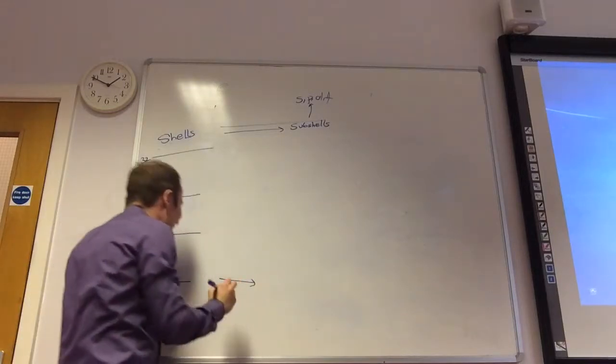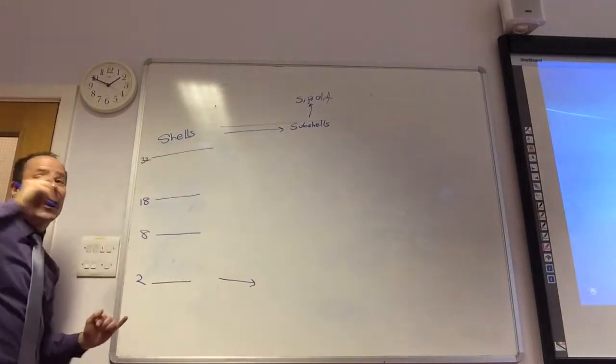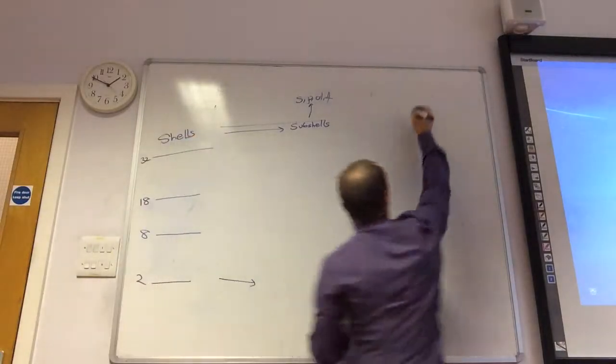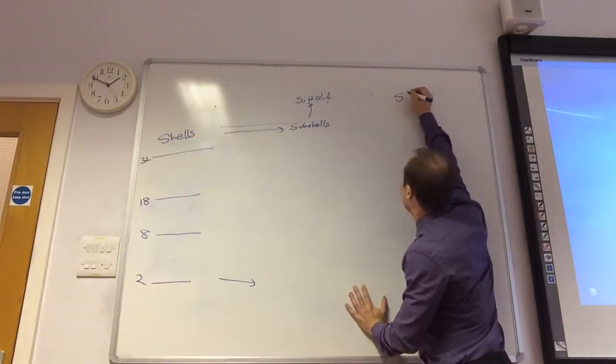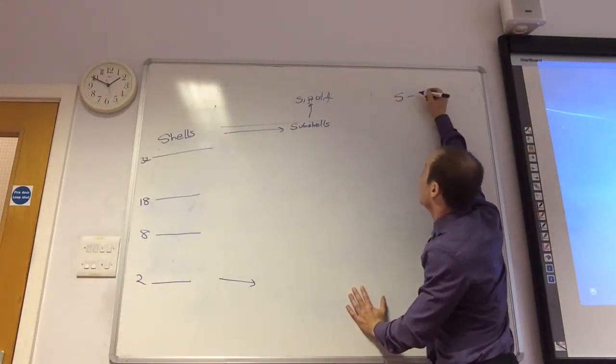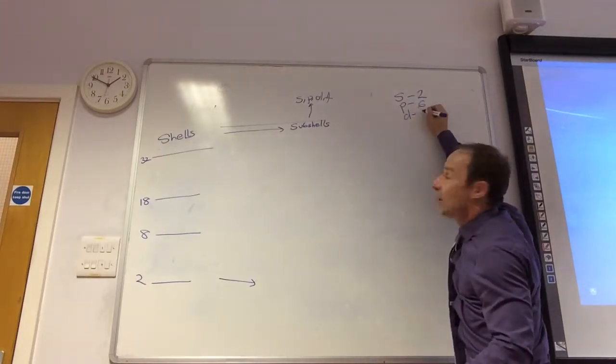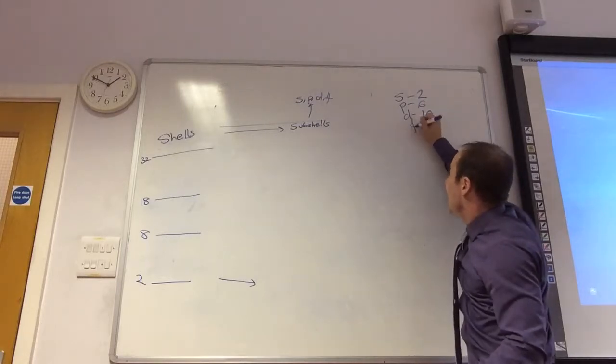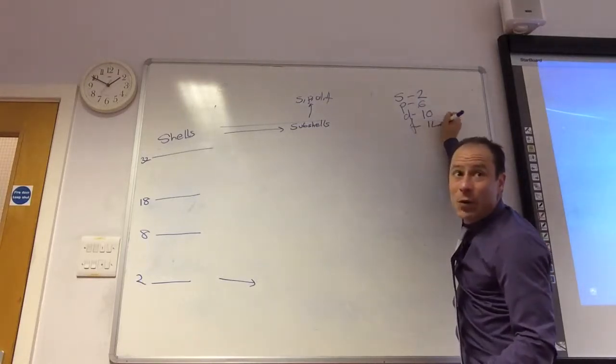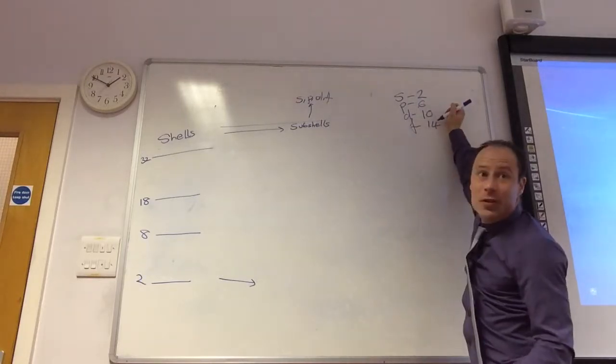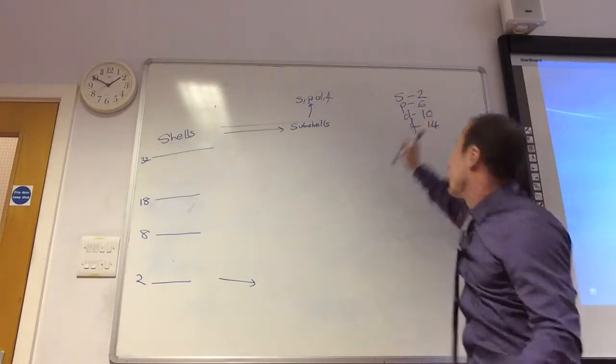Right, so, less sub-shells. An S sub-shell, how many electrons can that hold? Two. P can hold? Six. D can hold? Ten. F can hold? Fourteen. Always goes up and fours. Everything goes up and fours.